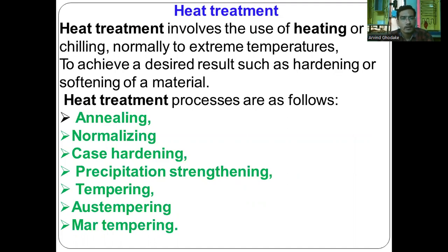In annealing, the metal is heated in the furnace and cooled in the furnace itself by switching off the furnace. In normalizing, the metal is heated in the furnace and cooled in the air or at room temperature. Third is case hardening, which is a surface hardening process — also called conventional hardening or quenching — where salt bath, water, or oil is used as a coolant. Then next is precipitation strengthening, which is also one type of heat treatment.